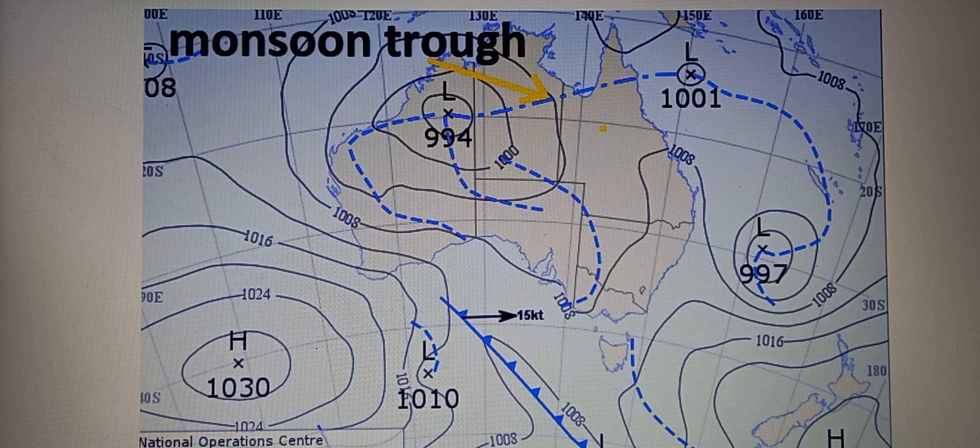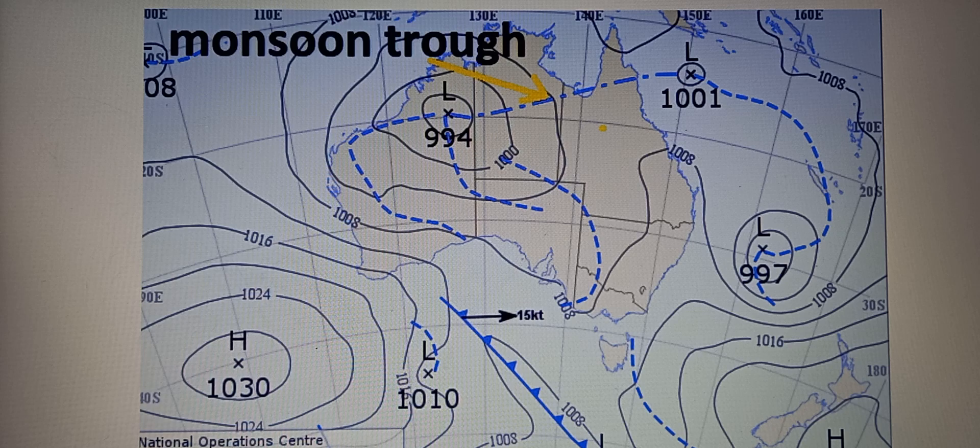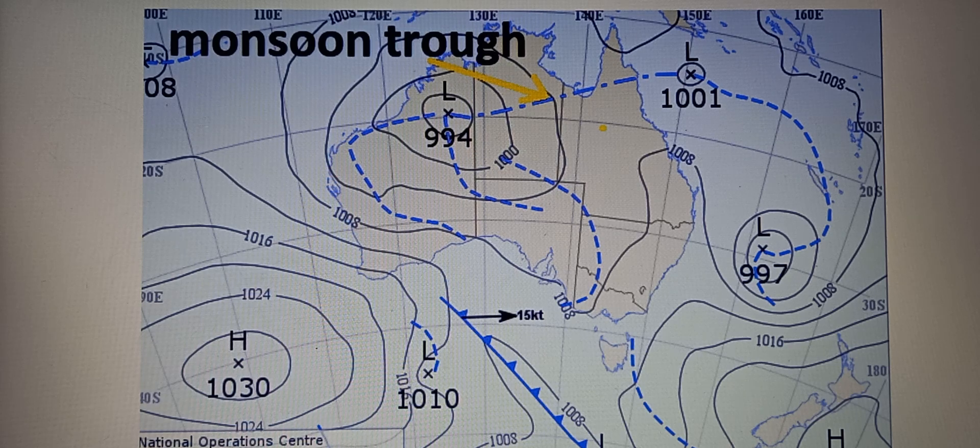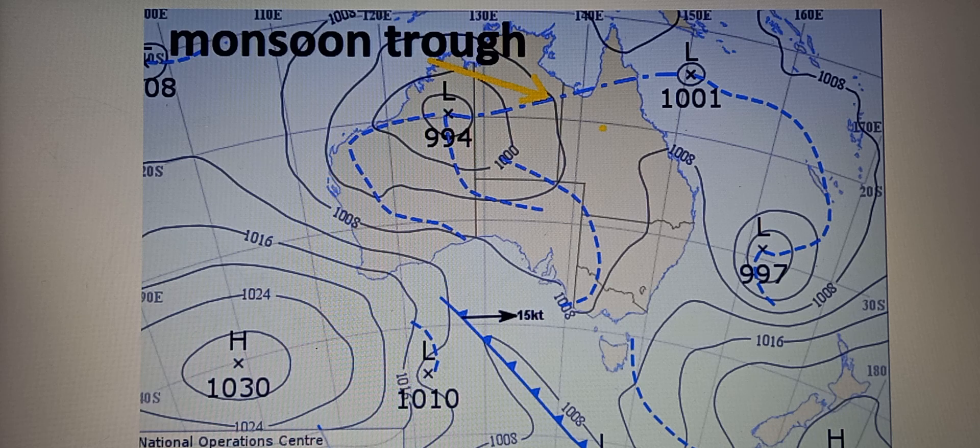The next is a monsoon trough, often called the monsoon. It is an area of low pressure known for heavy rain and thunderstorms. It is a significant component of Asian monsoons and similar systems worldwide. This trough forms due to seasonal wind shifts bringing together moisture-laden air masses.